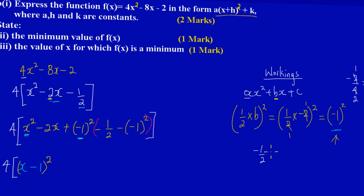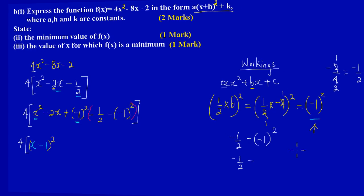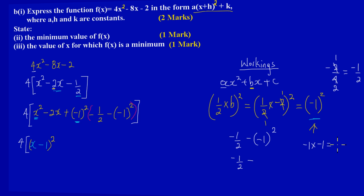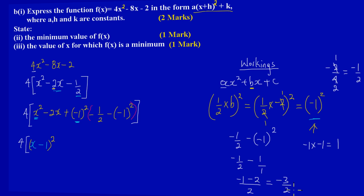The remaining constants are -½ minus (-1)². Let me calculate that: (-1)² = 1, but the negative sign in front of the bracket makes it -1. So I have -½ - 1. Finding the LCD: -1/2 - 2/2 = -3/2. So all the constant terms at the back simplify to -3/2.